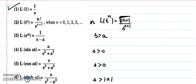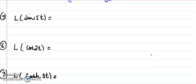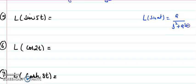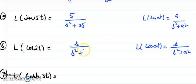For the sine function, L{sin(at)} = a/(s² + a²). So the Laplace transformation of sin(5t) is 5/(s² + 25). For the cosine function, L{cos(at)} = s/(s² + a²), so the Laplace transformation of cos(2t) is s/(s² + 4).